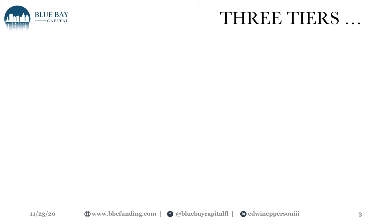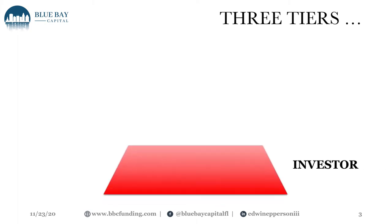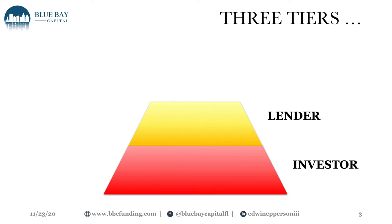The three tiers: the first tier is the investor — the capital provider. Whether institutional, a company, or an individual, the investor is the one who has the capital giving you the loan. Second is the lender. A lender is the person or entity that is underwriting — making sure that the loan request from you as the real estate investor meets the capital investor's requirements. The lender is the one doing the processing.